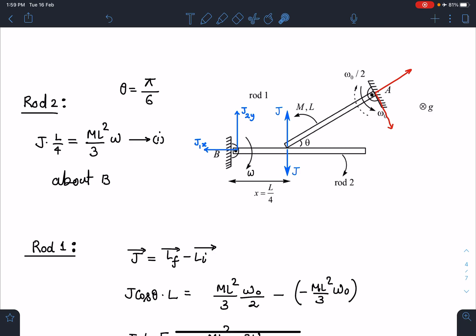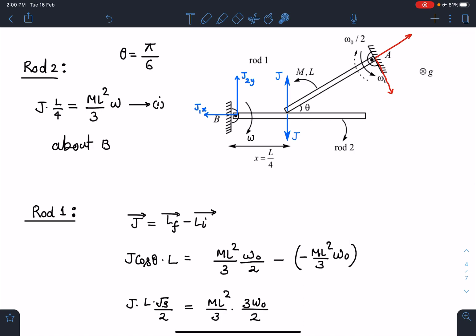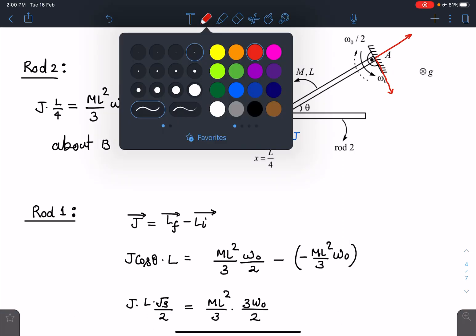For rod 2, angular impulse will be the change in angular momentum of this rod. Initially it was at rest, so J into L by 4 equals I omega, which is ML squared by 3 times omega. We are writing this equation about B. Similarly for rod 1, I can write change in angular momentum. I should have written here r cross J equals L final minus L initial.